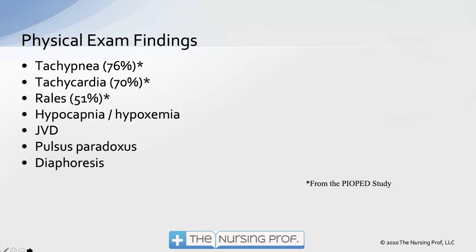Jugular venous distension occurs due to back pressure on the heart. Pulsus paradoxus is also seen — a situation where the patient's blood pressure changes with inspiration and expiration. When the patient inhales, there is more positive pressure in the chest combined with back pressure from the clot, causing blood pressure fluctuations. For example, one reading might be 150/90 and the next 120/70. In ICU patients with an arterial line you can watch the waveform oscillate up and down. Diaphoresis is also possible.